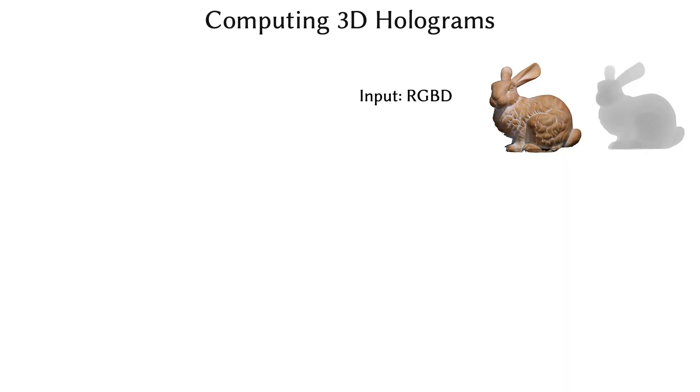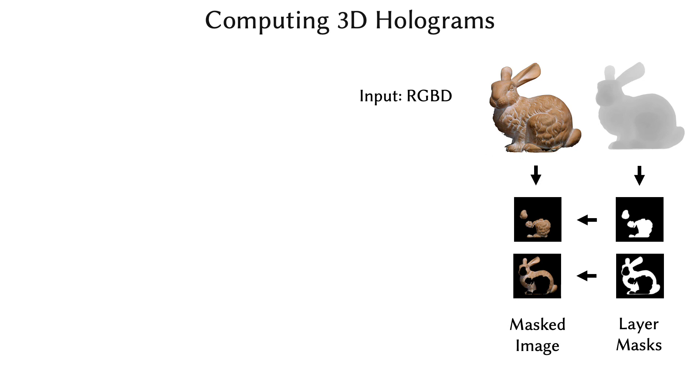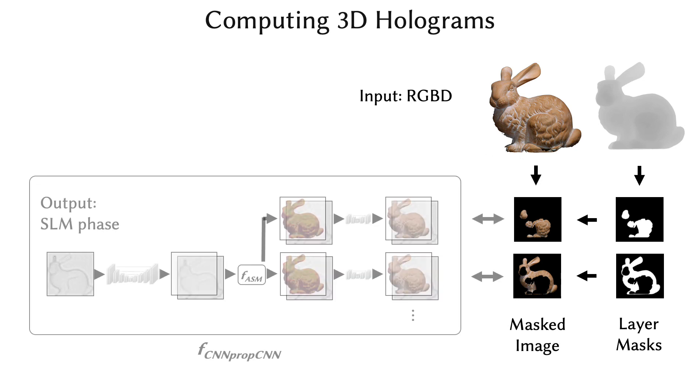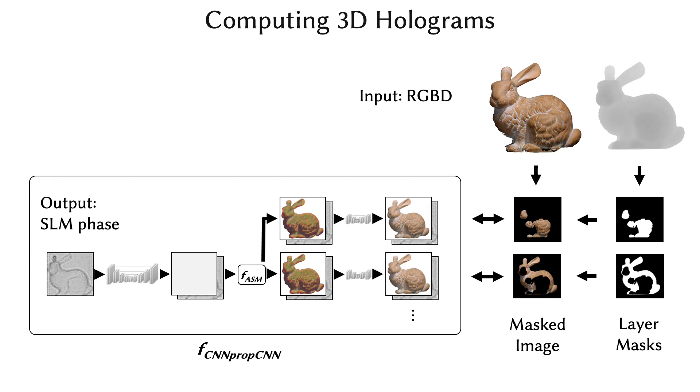When computing 3D holograms, our model starts with a target RGBD image. The depth map is quantized into a set of layer masks that allow the target image to be layered across several 3D planes. These target layers are used to supervise the multi-plane output of our 3D multi-plane model to compute the SLM phase pattern.